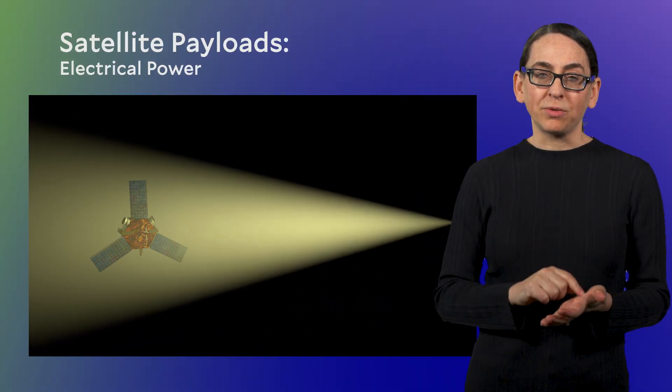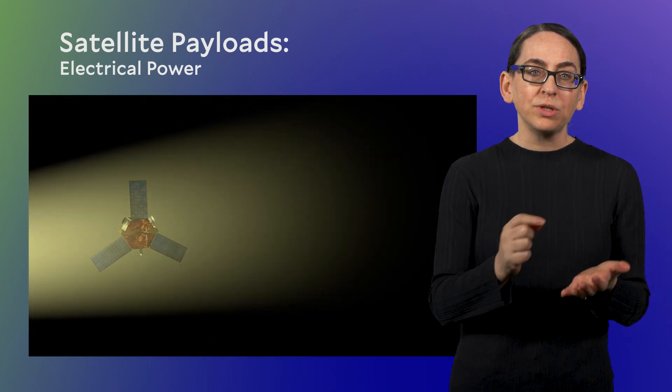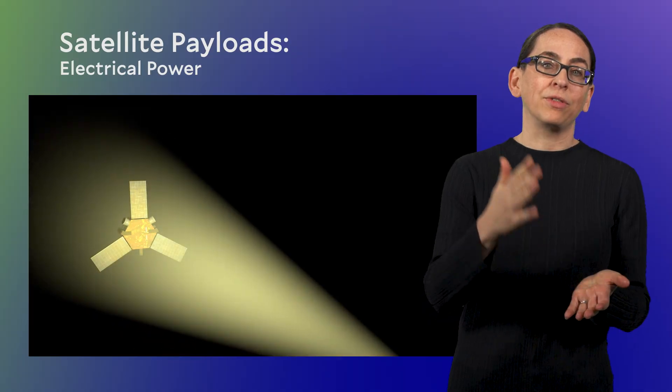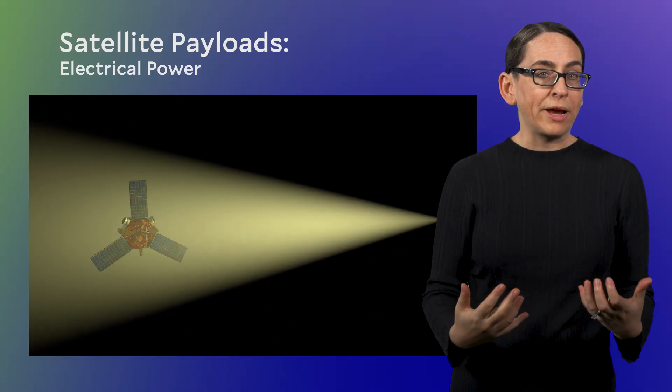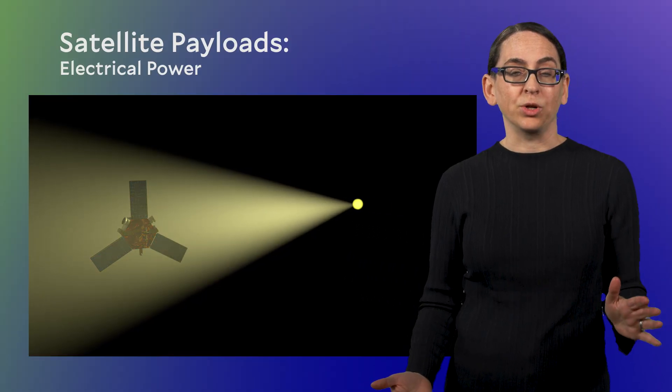A solar panel will only produce power if the Sun is shining directly on it. And if you've ever played with one of those kids' toys that has a solar cell, you know that as soon as the sunlight is removed, like if the clouds go overhead, a solar panel will stop producing power. And this is true in space as well. If the Sun is not shining directly onto a solar panel, there's no electricity available to run the satellite. That's not good.